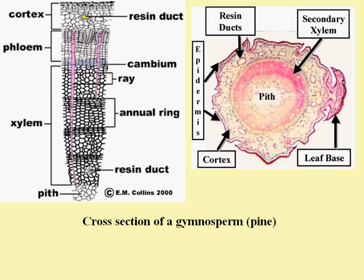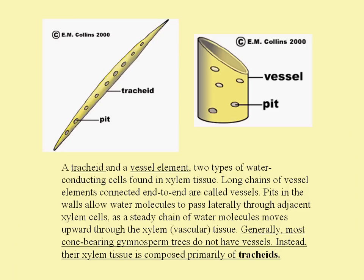Tracheids and vessel elements are two types of water-conducting cells found in xylem tissue. Generally, most cone-bearing gymnosperm trees like pines do not have vessels. They have very narrow tracheid vessels, which means when arborists try to inject chemicals or fertilizers into gymnosperms, the chemicals don't move up as quickly as they would in a hardwood that has vessels, because gymnosperms only have tracheids.